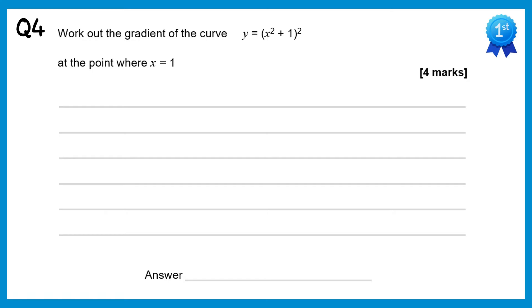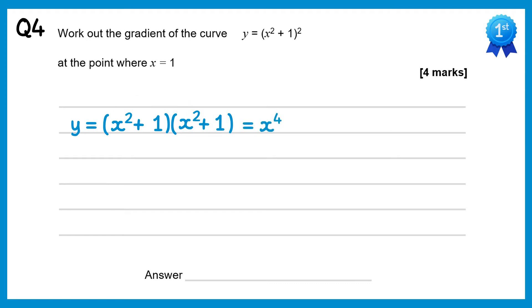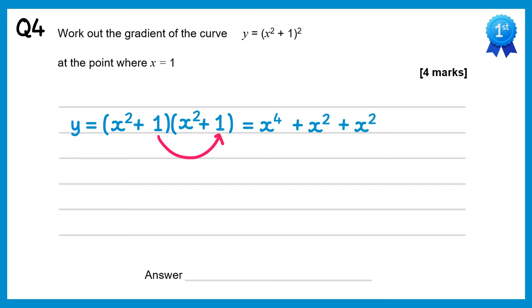For this question the equation of the curve is in the form of a bracket squared. Remember when you have a bracket squared that's just the bracket times by itself. We expand this: x squared times x squared is x to the power 4, x squared times plus 1 is plus x squared, plus 1 times x squared is plus x squared, and 1 times 1 is just plus 1. Simplifying the x squared terms gives y equals x to the 4 plus 2x squared plus 1.